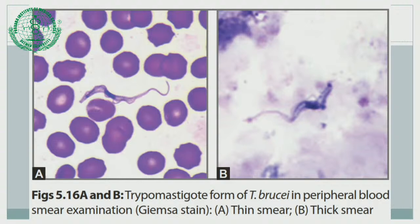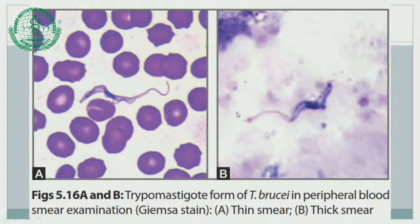This is the direct demonstration of the parasite. You can see the Giemsa-stained peripheral blood smear — image A is a thin smear and image B is a thick smear. Here you can see the parasite — the flagellated form, or trypomastigote.